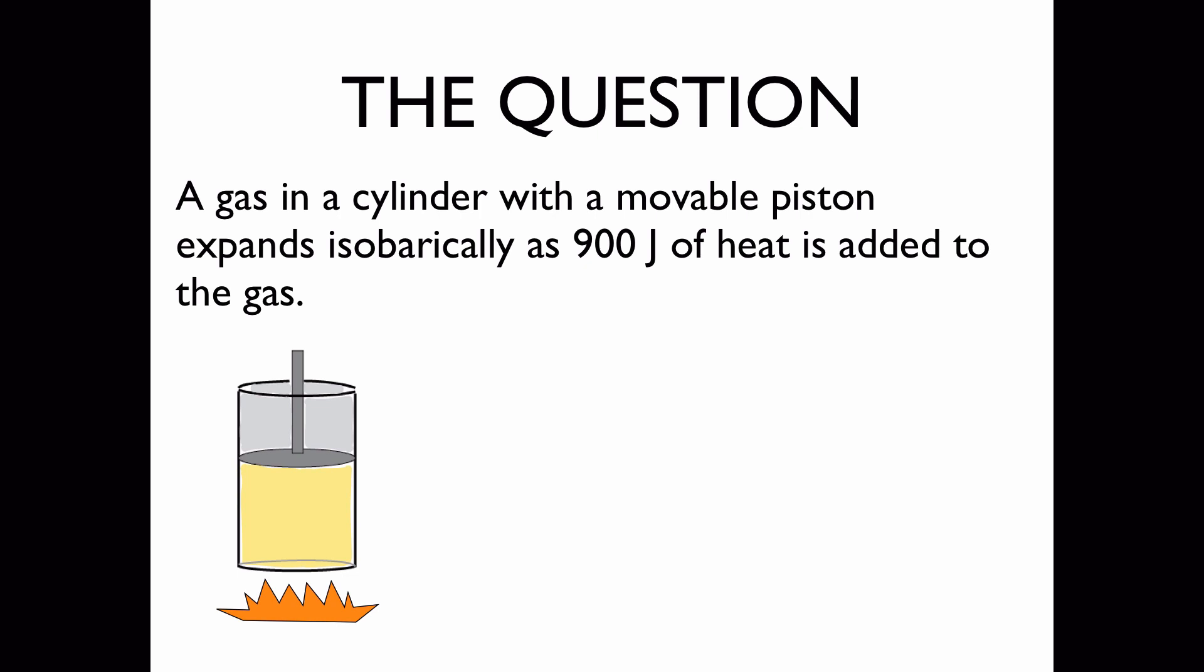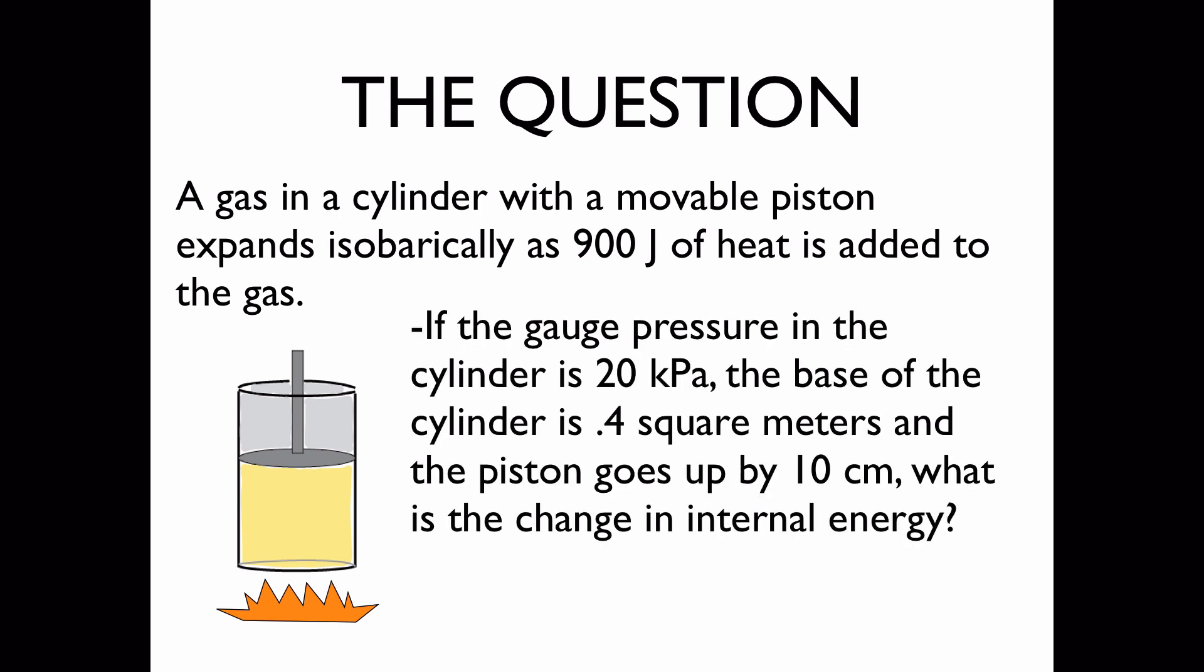Isobarically means that the pressure is constant during the transformation. If the gauge pressure in the cylinder is 20 kPa, the base of the cylinder is 0.4 m², and the piston goes up by 10 cm, what is the change in internal energy of the gas?